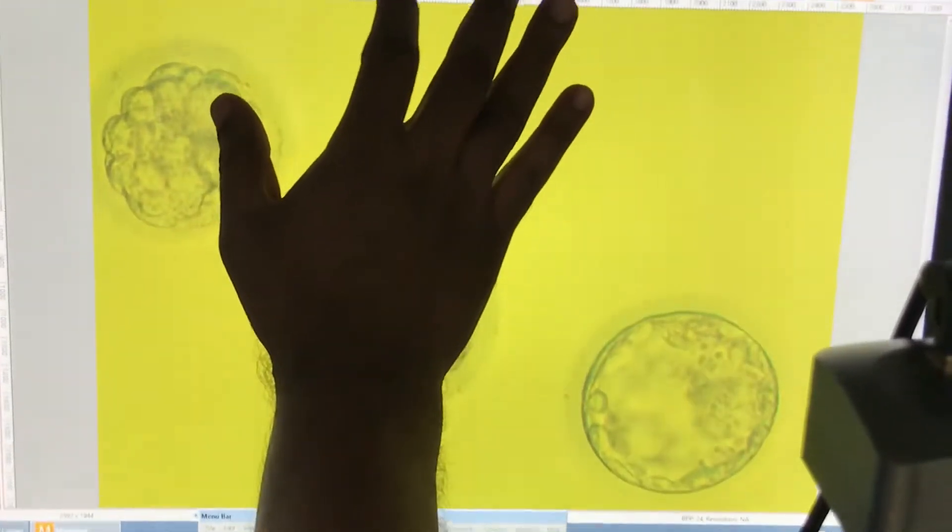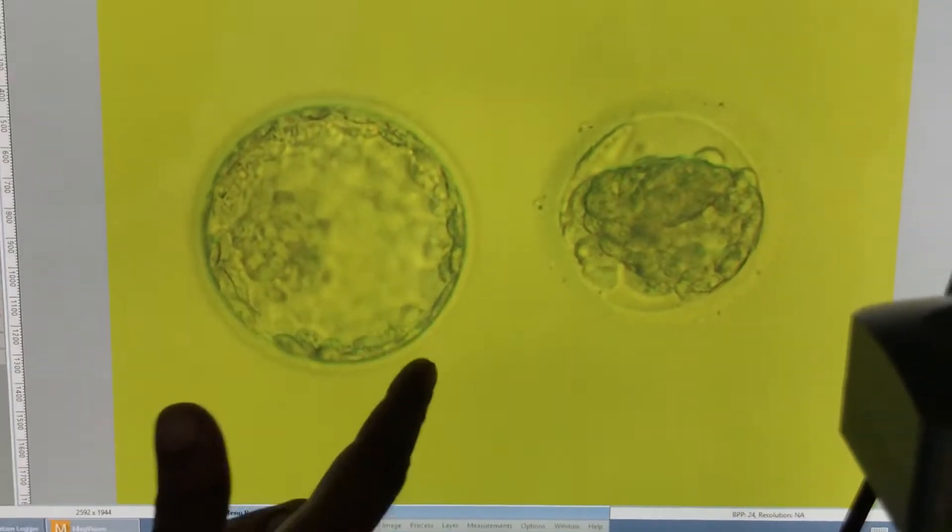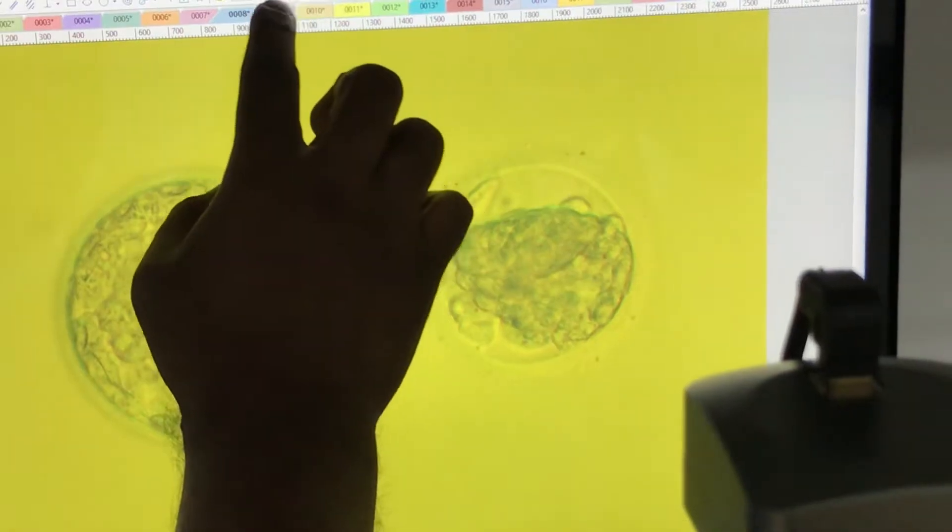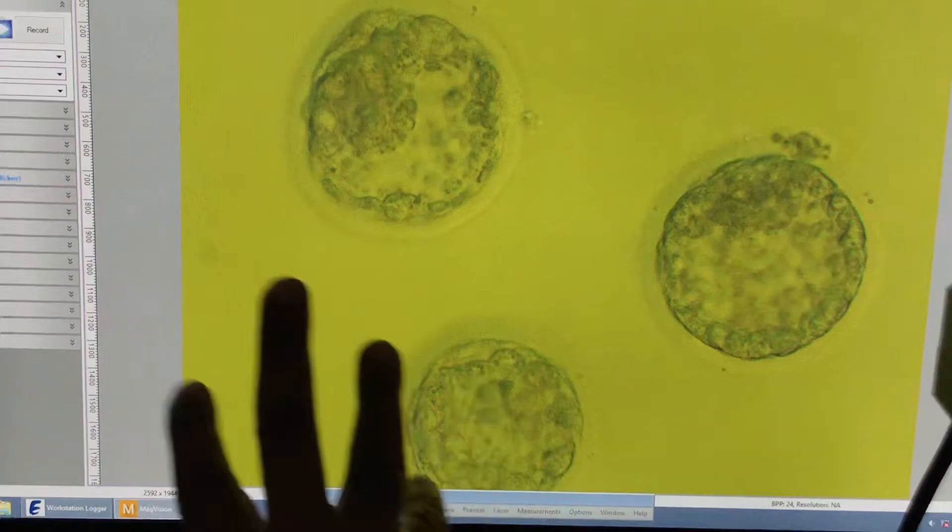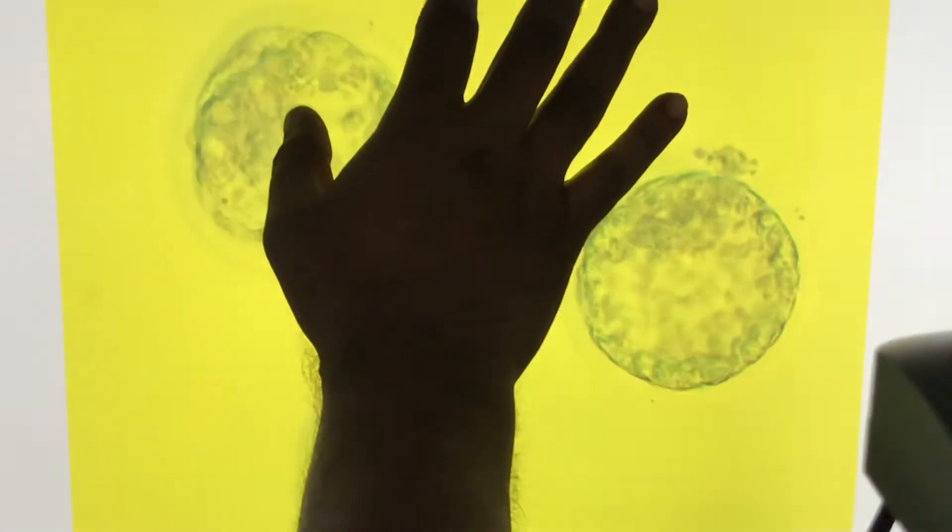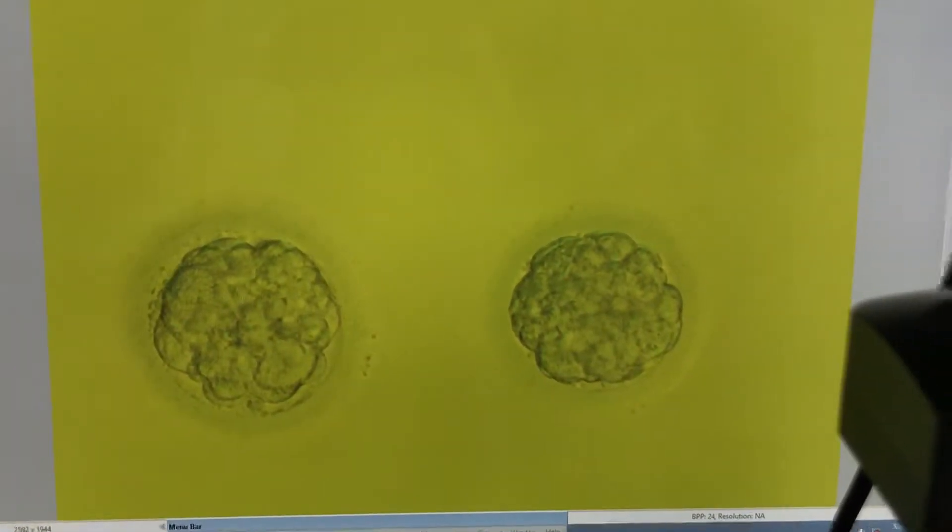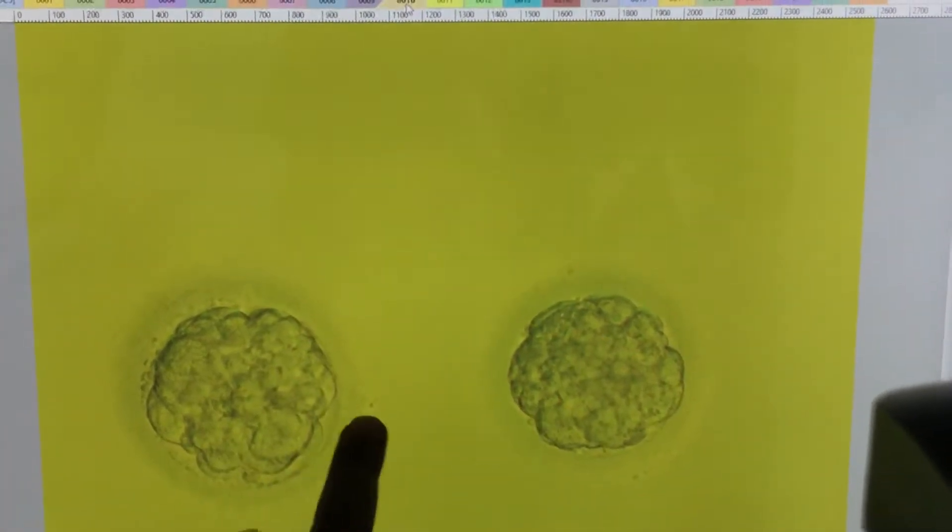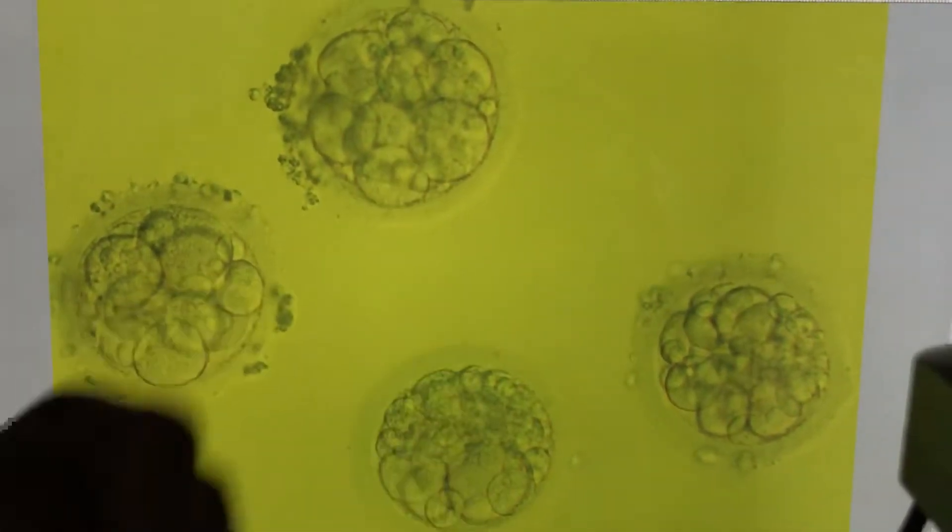Patient number seven - after thawing, this embryo is a little bit bulged. These three are good. Patient number eight has one almost about to hatch, and one 2AA something like that. We'll see the post culture. Patient number nine has cells that are a little bit scattered - we have three blastocysts post-thaw.